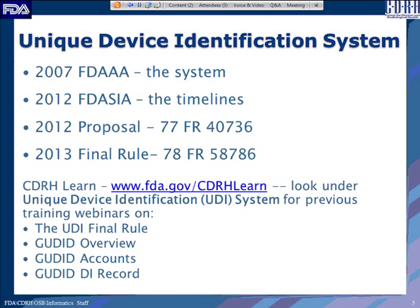For a quick overview: the Unique Device Identification System was started back in 2007 through the FDA Amendments Act, where Congress gave FDA the statutory authority to establish a UDI system. In 2012, the FDA Safety and Innovation Improvement Act provided timelines for implementation. We strongly recommend that you take time to visit the CDRH Learn portion of the FDA website and look for additional training information and webinars on the final rule.